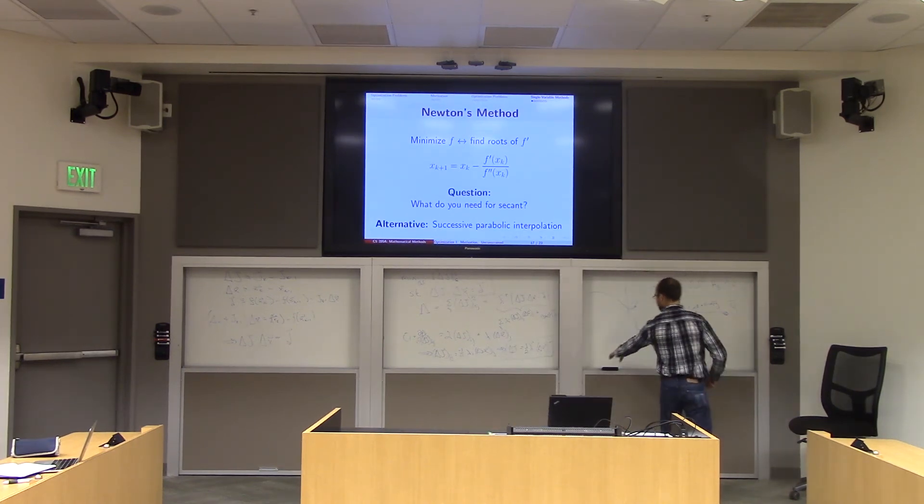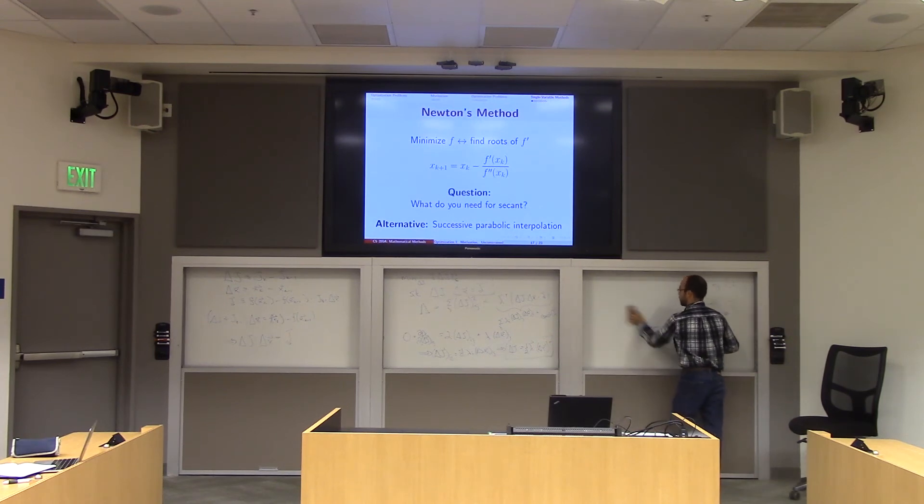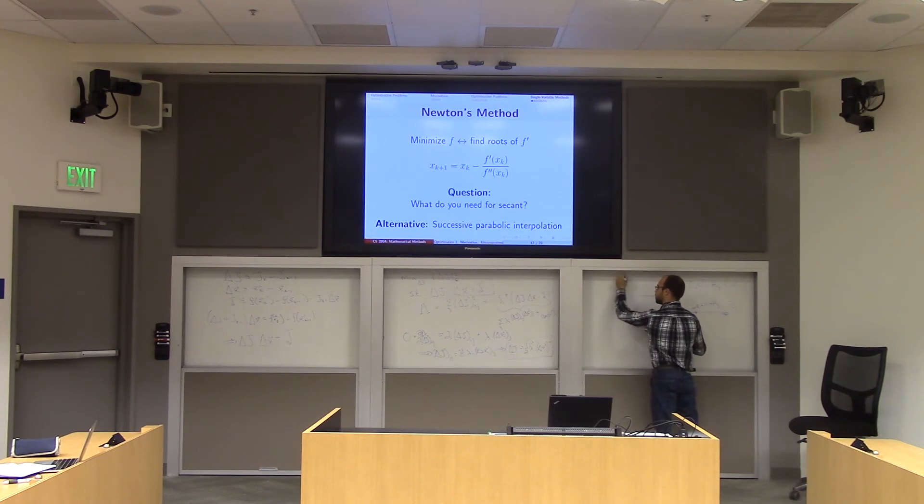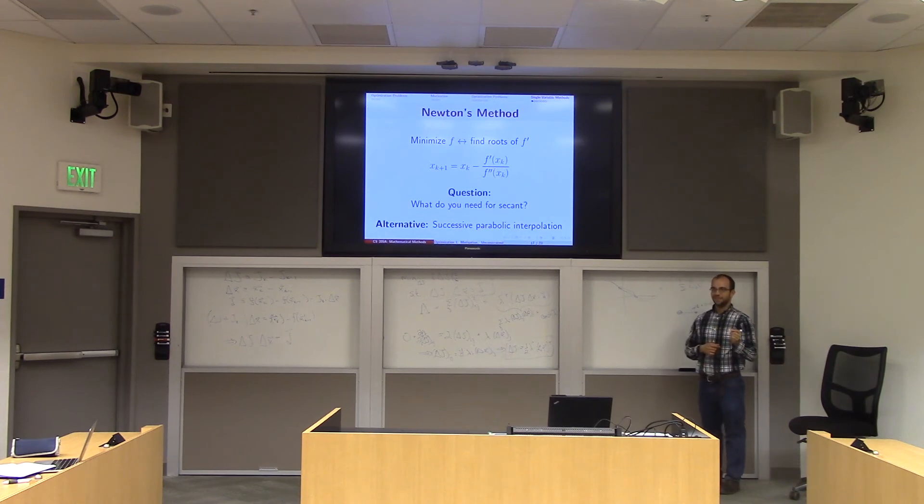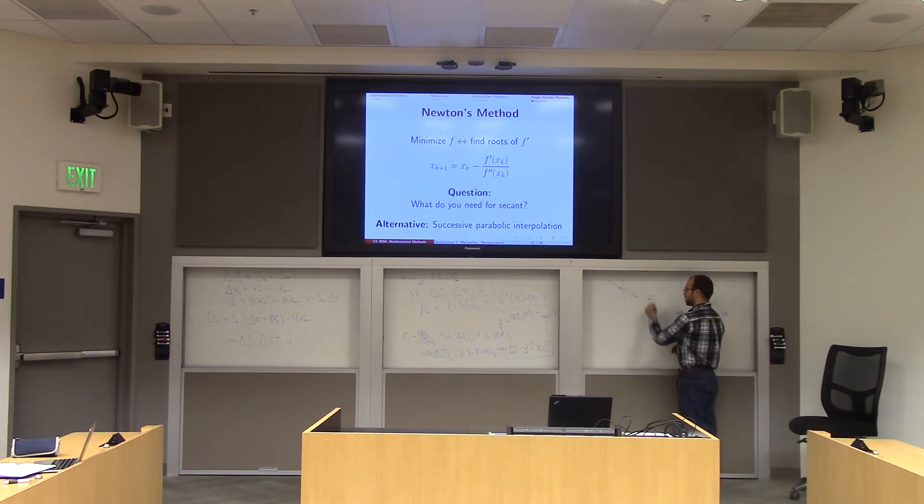But what you could do is do something similar to the secant method. We call it successive parabolic interpolation. And the idea here is that you keep track of the last three iterates. So let's say that I'm trying to minimize some function. And my last three iterates were like here, here, and here. One thing I could do is draw a parabola through those three points, just my last three iterates. And now we know the minimum for a parabola. It's easy to find the vertex. So that's going to be our next guess.